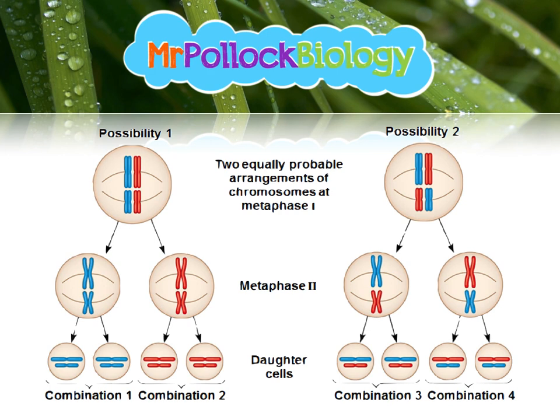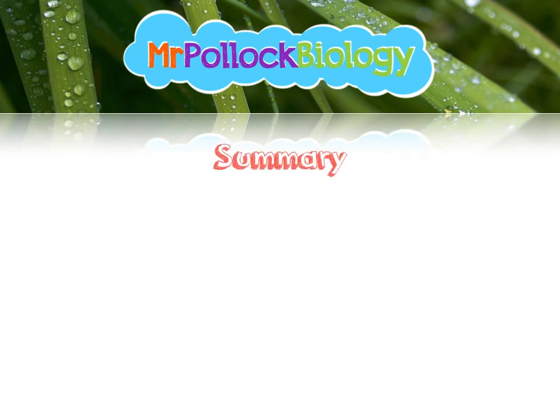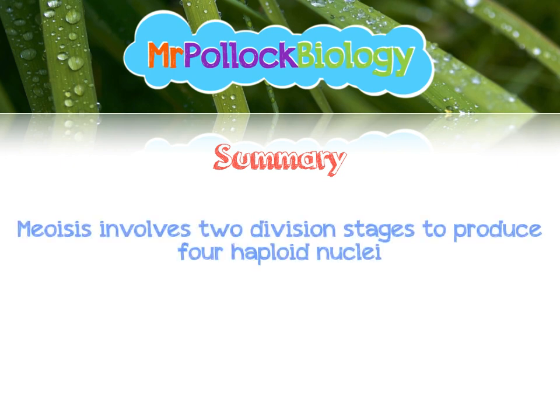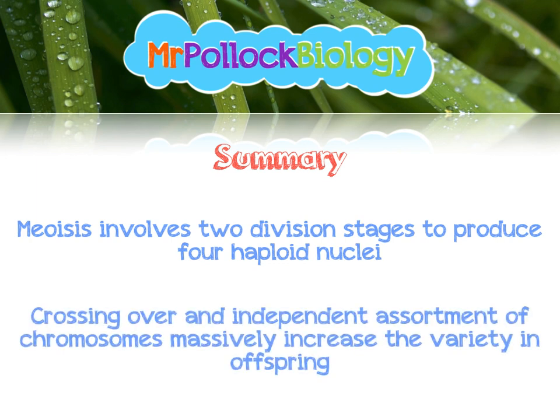To summarise: meiosis involves two division stages to produce four haploid nuclei, and this produces massive amounts of variation because crossing over and independent assortment of chromosomes occurs. Please don't get too stressed about meiosis — just learn the stages and everything will be absolutely fine. Thank you very much for watching. Please like, comment, and subscribe.